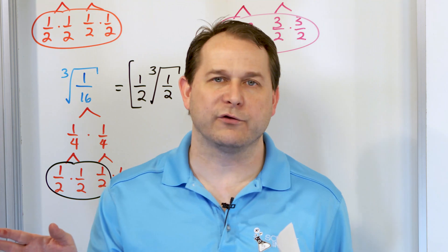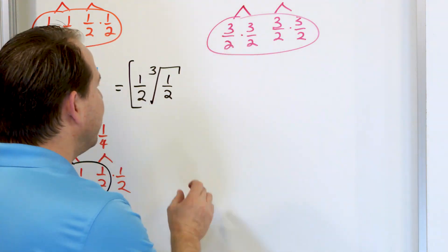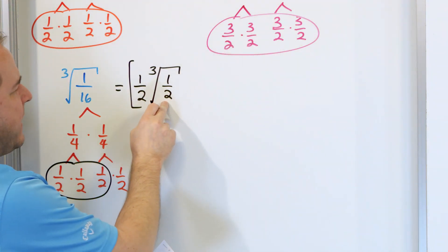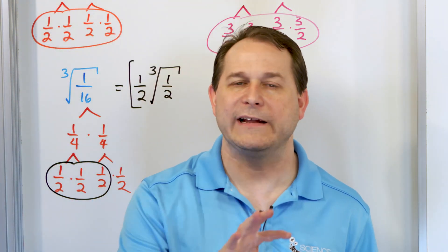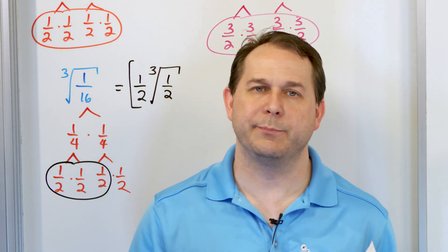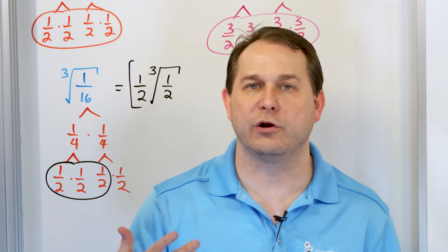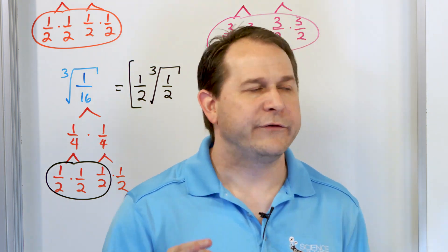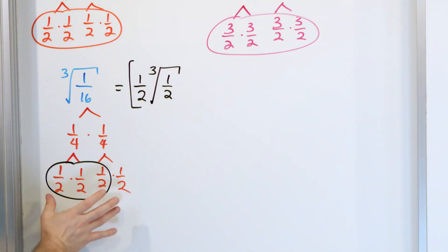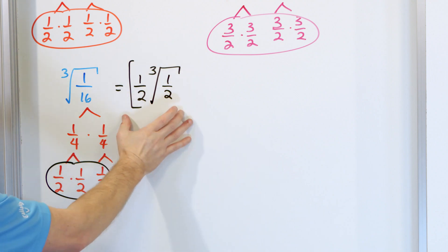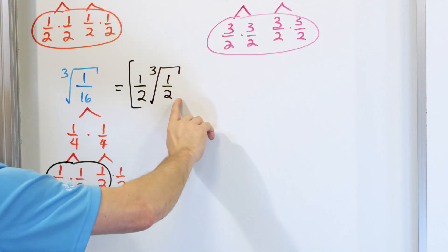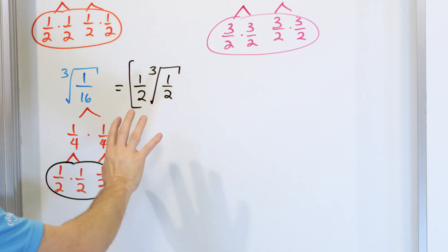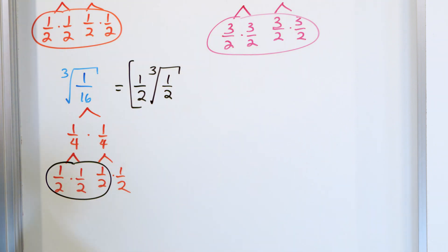Later on I'm going to teach you how to get rid of the fraction inside the radical and how to get rid of radicals in the denominator. I can't do too many things at once. Right now I'm trying to get you to focus on how to figure out what the cube root is. This is absolutely true, but there is a way to simplify this further that we'll get to a couple of lessons from now, so keep that in the back of your mind.